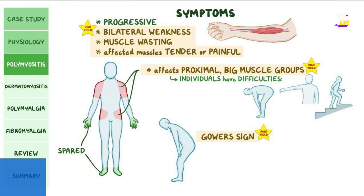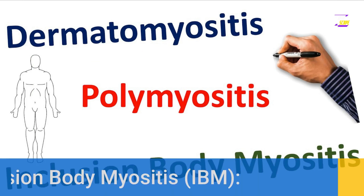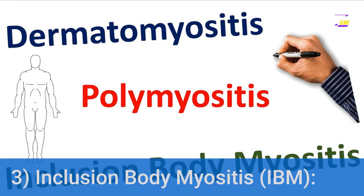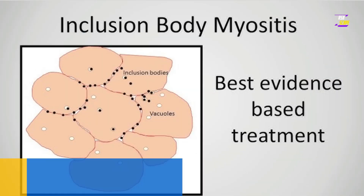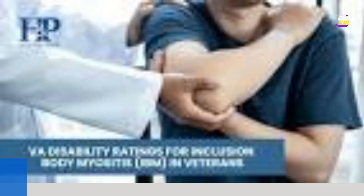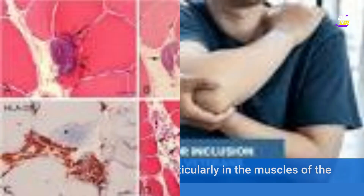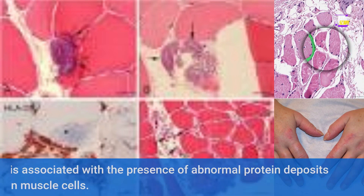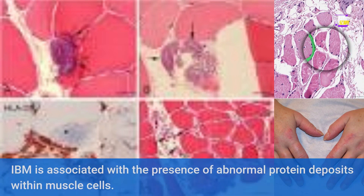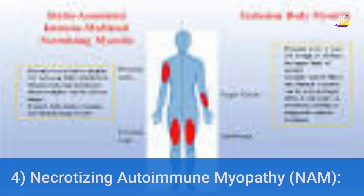Unlike dermatomyositis, polymyositis does not have the characteristic skin rashes. 3. Inclusion Body Myositis (IBM) — inclusion body myositis is a progressive and debilitating form of myositis that primarily affects older adults. It causes muscle weakness, particularly in the muscles of the arms and legs.